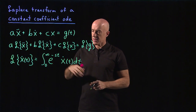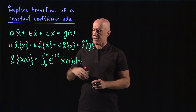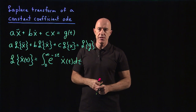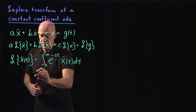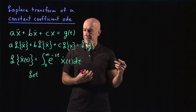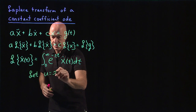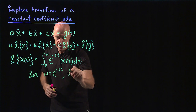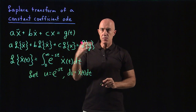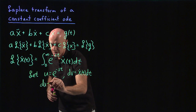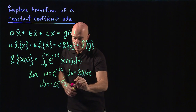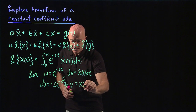We have this pesky derivative on x, so we need to pull that derivative over, which is what you do when you do an integration by parts. We have a u and a dv piece: we let u equal e to the minus st, and dv equal x dot of t dt. Differentiating u gives du equals minus s e to the minus st dt, and integrating dv gives v equal to x of t.